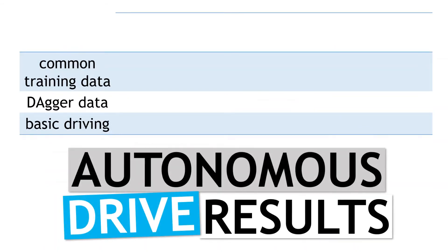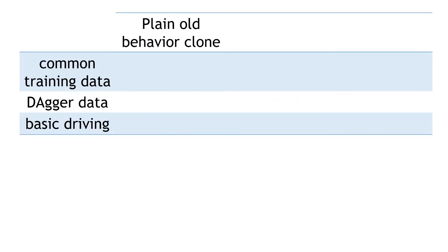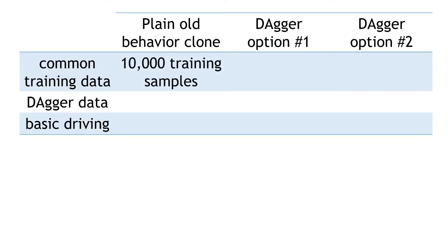So how did things go? I ended up comparing three different policies. One was the plain old behavior cloning model, and the other two were policies trained using the two different Dagger options. The behavior cloning policy is really a baseline. It was trained using a set of 10,000 training examples collected from regular expert driving data.